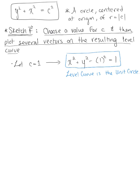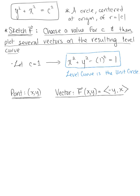Now let's plot some vectors by creating a table of values. We choose points (x, y) that sit on the unit circle, then use each point to find the corresponding vector using F(x, y) = (-y, x). The x and y intercepts help us immensely here. We'll start with the four points: (1, 0), (0, 1), (-1, 0), and (0, -1). If there are too many gaps between these ordered pairs, we can choose more points.